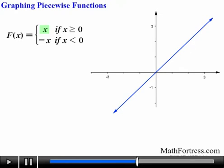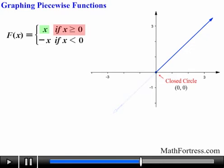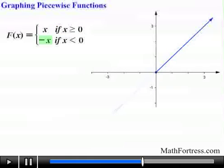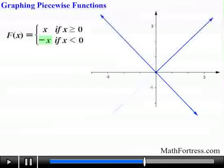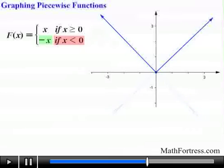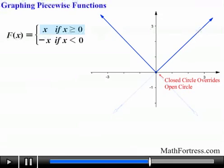Now apply the restriction x ≥ 0, erasing the function up to x = 0 and placing a closed circle there. Next, graph f(x) = -x — a line with slope -1 through the origin. Apply the restriction x < 0, keeping everything to the left of 0 and erasing to the right. We include an open circle at x = 0, but since the first function already has a closed circle there, the closed circle overrides the open one.